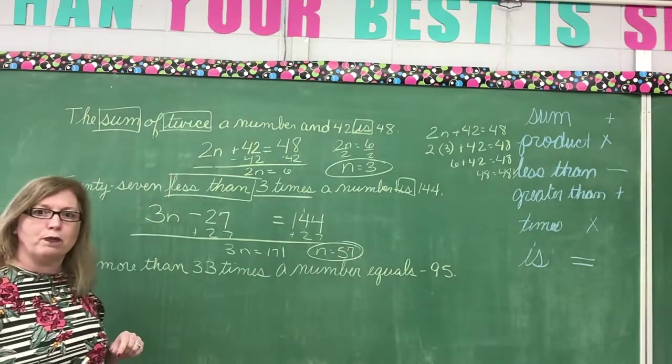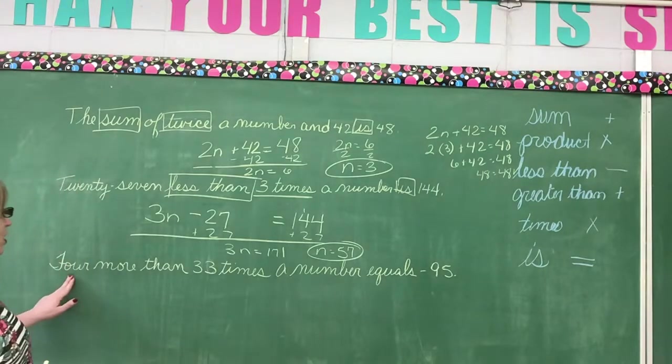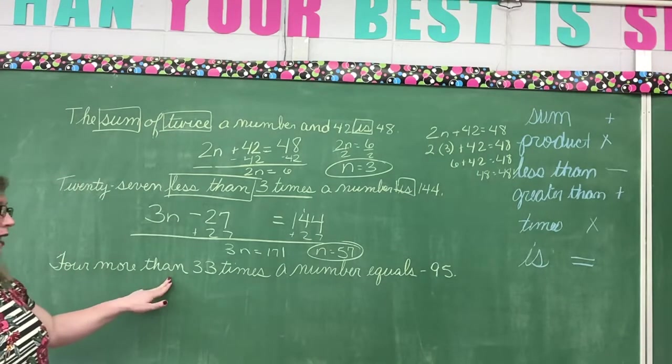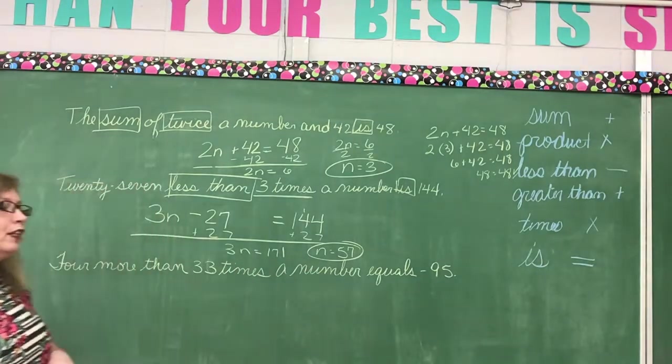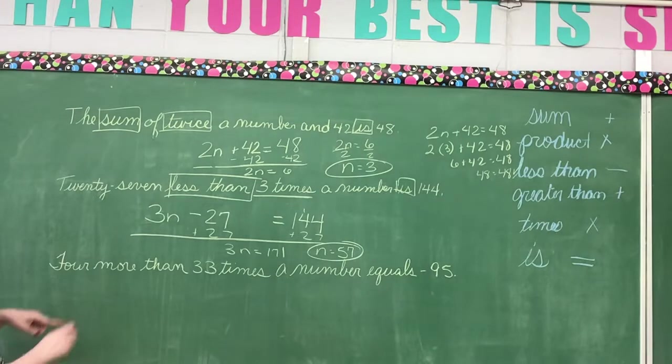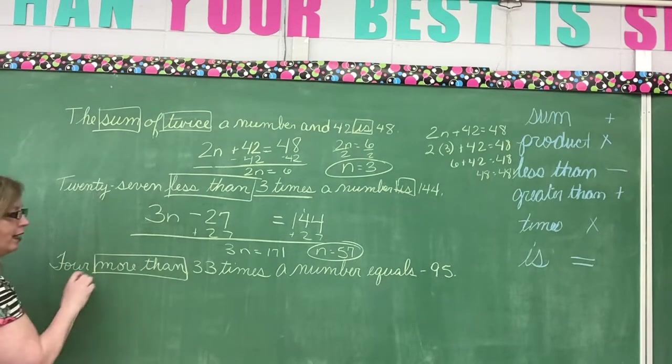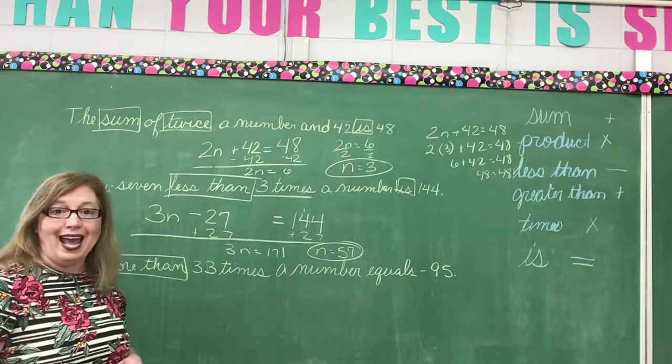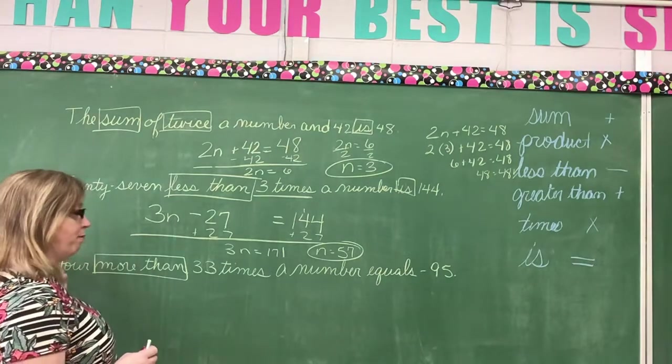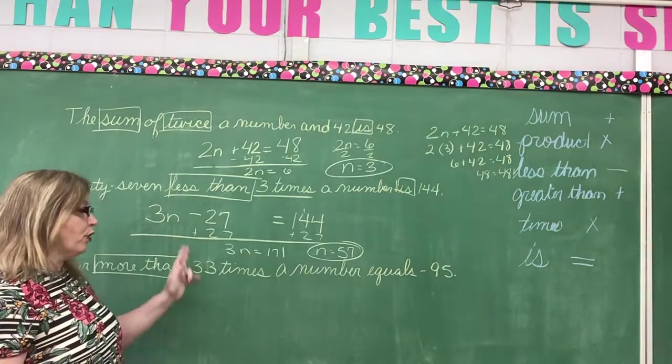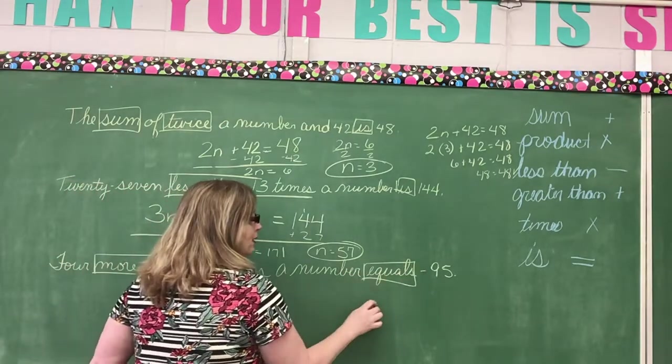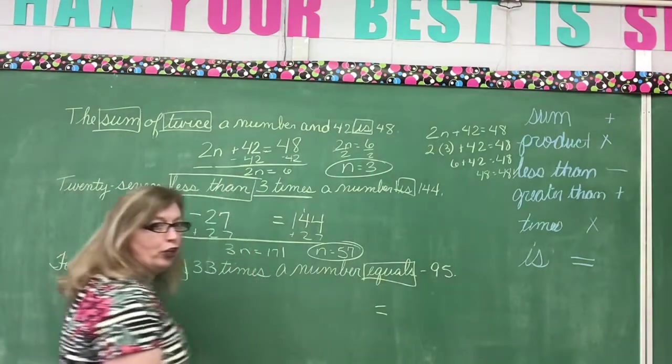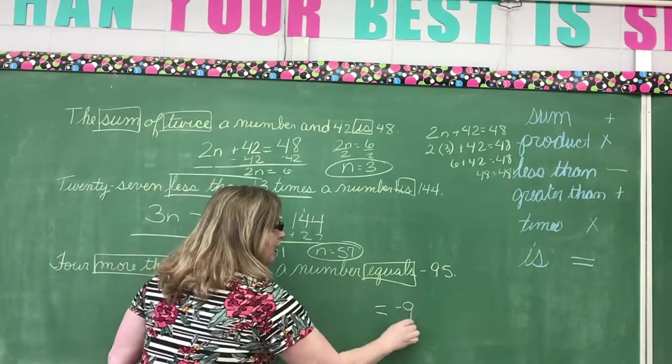Sorry that the board is so crowded here. Let's look at the next one. 4 more than 33 times a number equals negative 95. Let's look for the clue words. 4 more than. What am I going to do? I'm going to be adding. What am I going to add? I'm going to add 4 to something. 33 times a number. And then I have the word equals. Well that makes it pretty clear. That's where my equal mark is going to go. Negative 95.